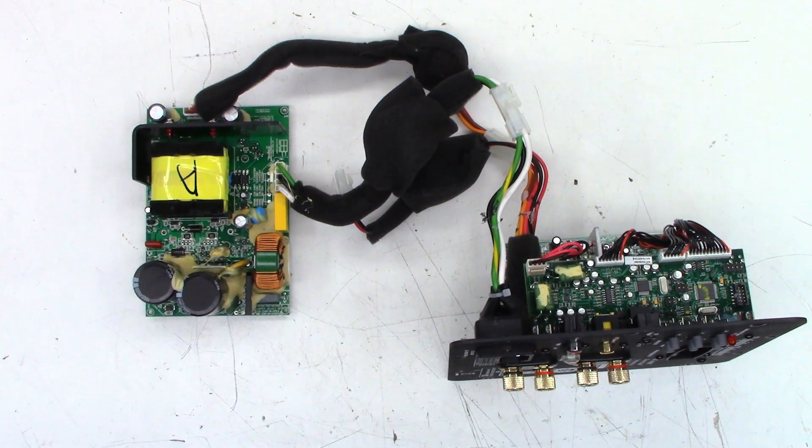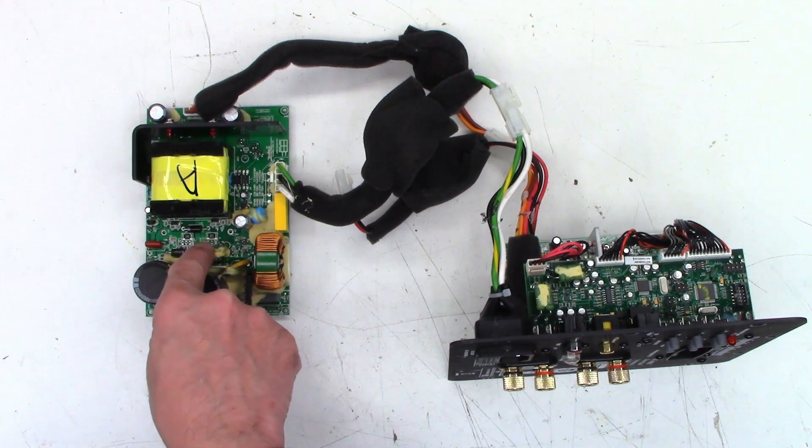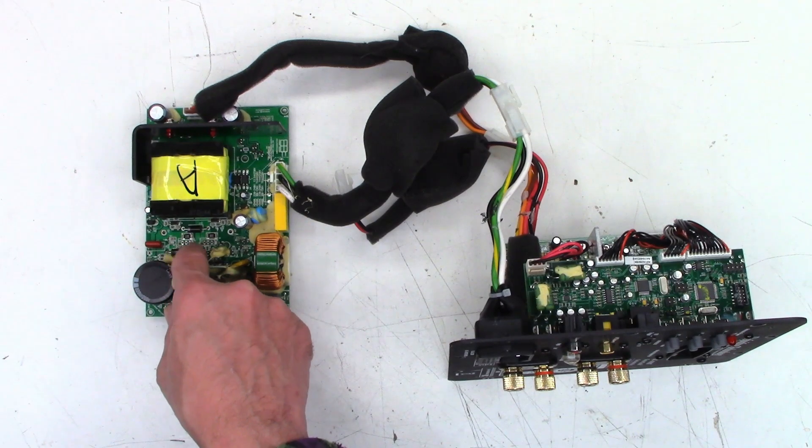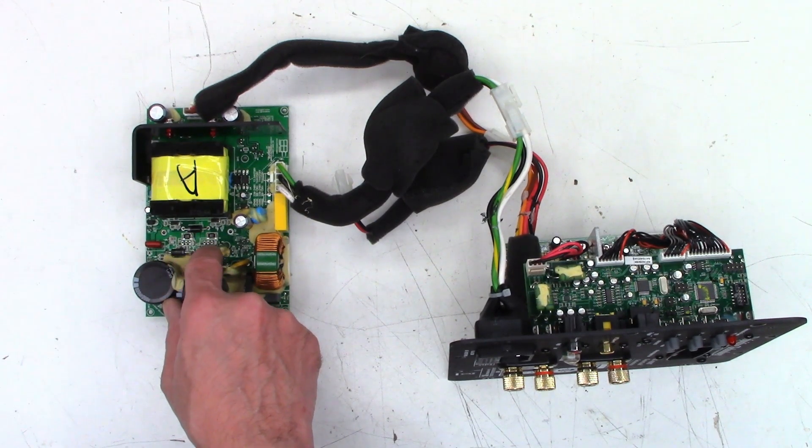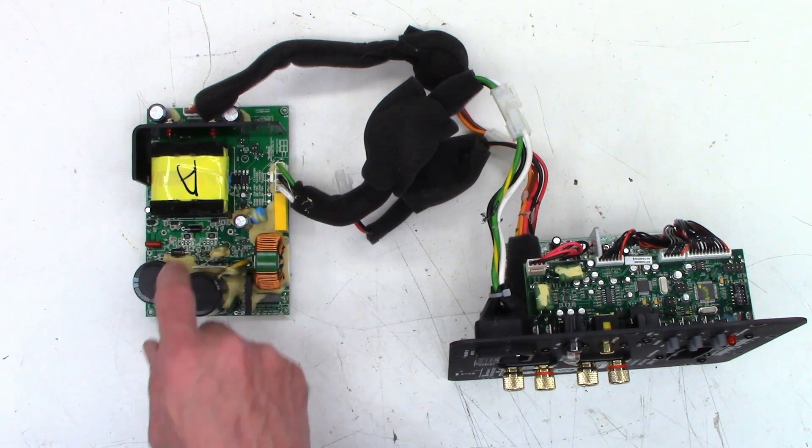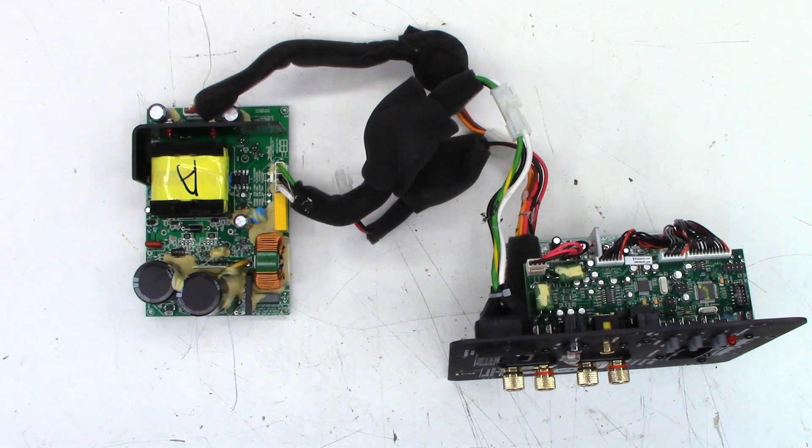So what I want to do is power this thing up and make sure that I have my full probably 320 volts approximately across these two FETs. And then I want to take a look at the gate drive on each FET and see if I see any oscillation.